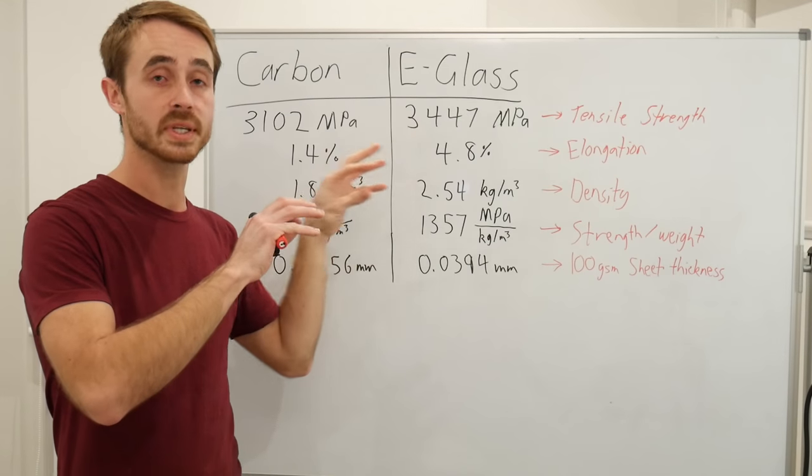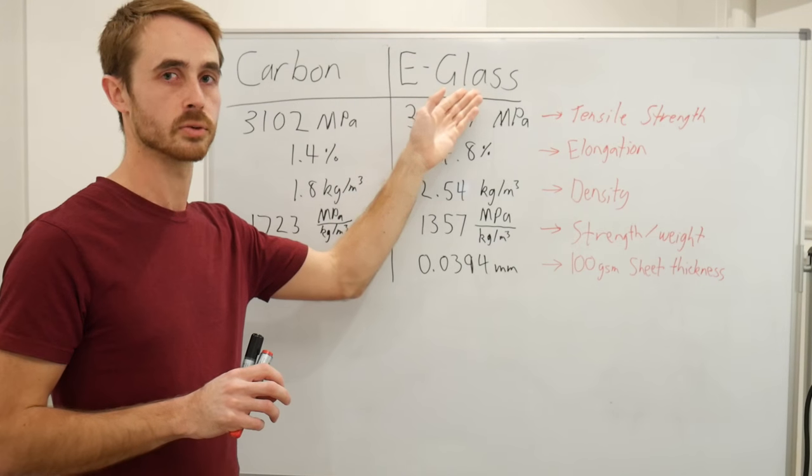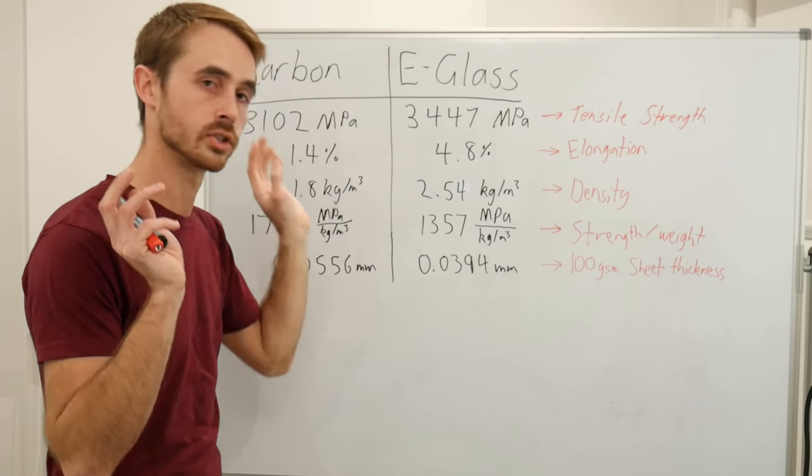These are basically properties that are representative of two off-the-shelf things - the carbon you buy off the shelf and the e-glass you buy off the shelf. Nothing exotic, just straightforward stuff.